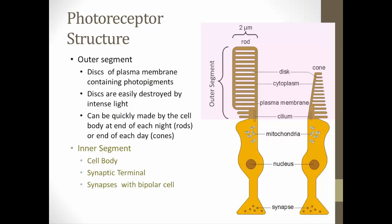First, the outer segment basically consists of a bunch of disks made up of plasma membranes, and these plasma membranes contain photopigments buried in them. The disks can be easily destroyed by light, so they have to be replaced, and they are replaced by the cell bodies.